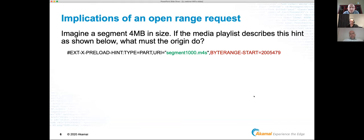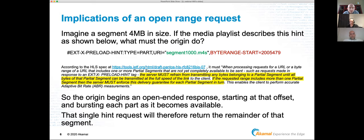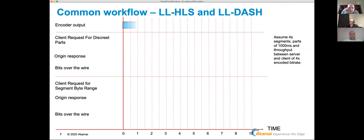For open range requests, the spec states the server must restrain itself from transmitting bytes of a part unless it is fully complete — this guarantees parts are sent at wire speed, not encode speed, allowing the client to better estimate throughput. If the requested range contains more than one part, the server must keep enforcing this delivery guarantee. So the origin delivers the hinted part, pauses until the next part is fully ready, and bursts it down the same connection.